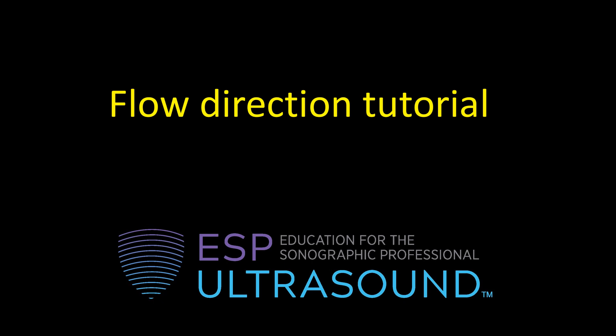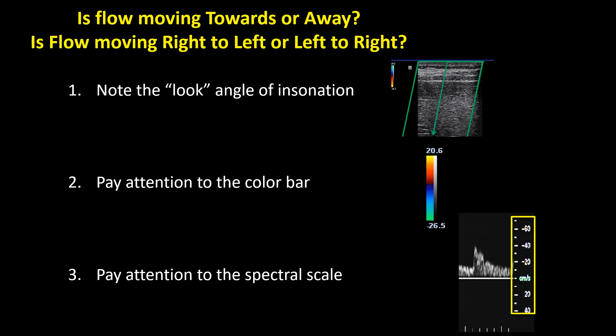There always seems to be some confusion about flow direction — that is, flow towards or away from the transducer. So I put this little tutorial together for you, hope it helps. The question is: is flow moving towards or away from the transducer, and is flow moving from right to left or left to right on the image? Here are the things we need to pay attention to: first, the look angle of insonation, and we need to always pay attention to the color bar and the spectral scale.